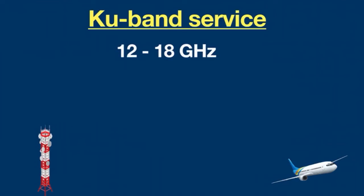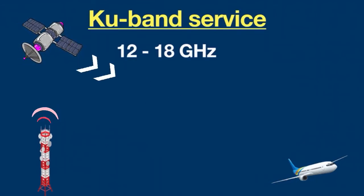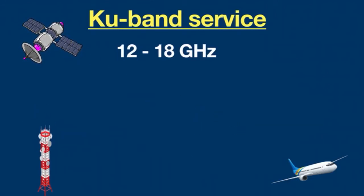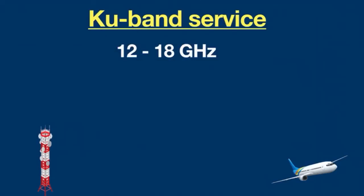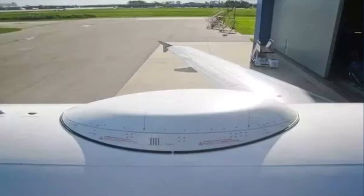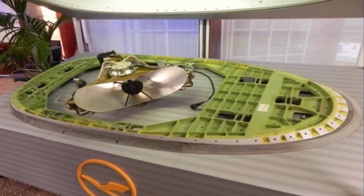The satellite maintains a highly reflective mirror that reflects signals from a cell tower toward the antenna on the aeroplane. Signals are then decoded via the aeroplane's server and distributed to passengers through a wireless router. The antenna is installed inside a dome-shaped container on top of the plane, and it moves and adjusts itself to point toward the nearest satellite above it.